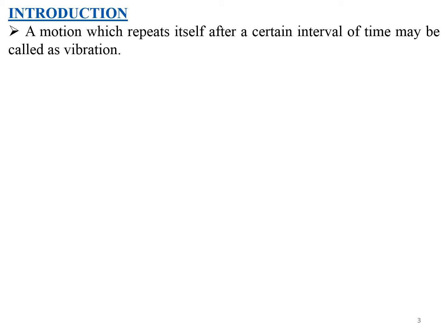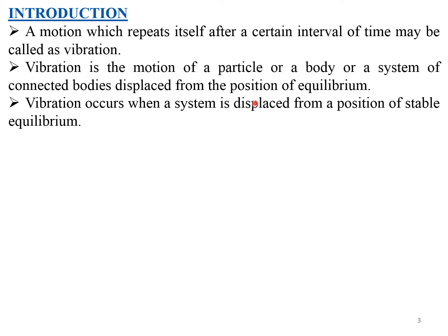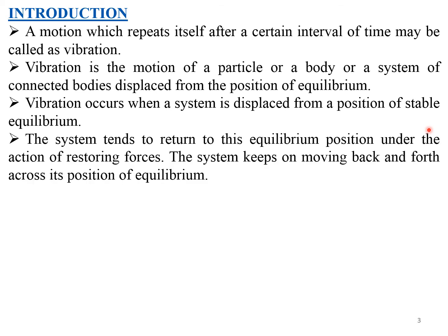In this chapter we will be learning about what vibration is, the different types of vibration, and how to minimize vibrations, along with some numericals on simple harmonic motions. Vibration is the motion of a particle, body, or system of connected bodies displaced from the position of equilibrium. Vibration occurs when a system is displaced from a position of stable equilibrium.